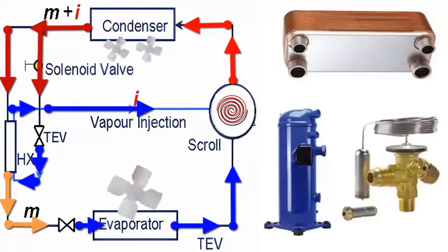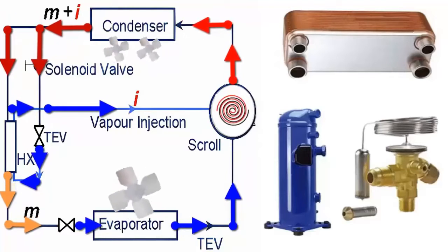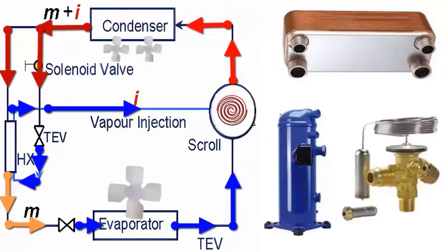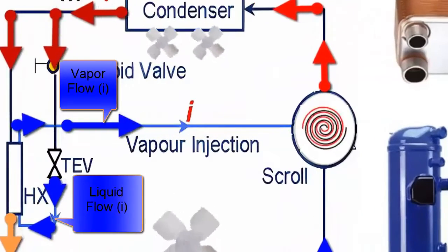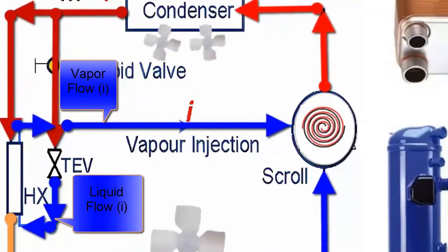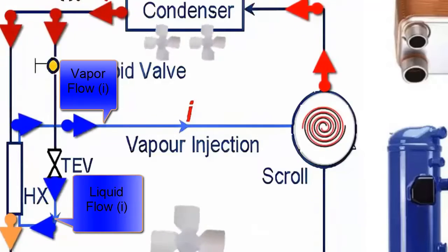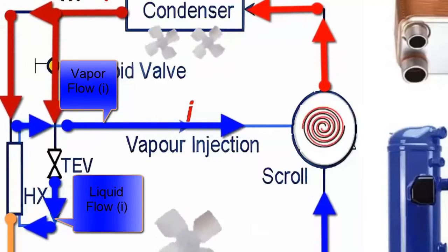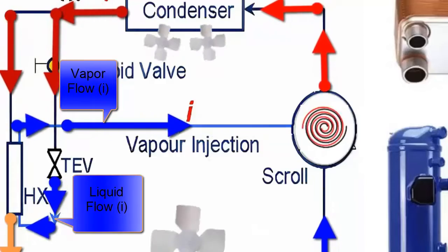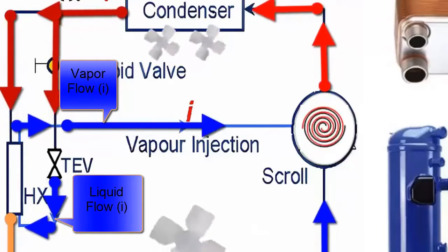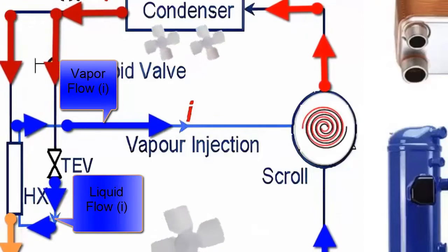The refrigerant flow, referred to as I, at the outlet of the expansion valve in the economizer system, changes from liquid to vapor in the HX exchanger. As it is still at a low temperature, it is injected back into the scroll compressor, providing additional cooling to the compression process, which is especially useful in high compression ratio applications such as freezing equipment.